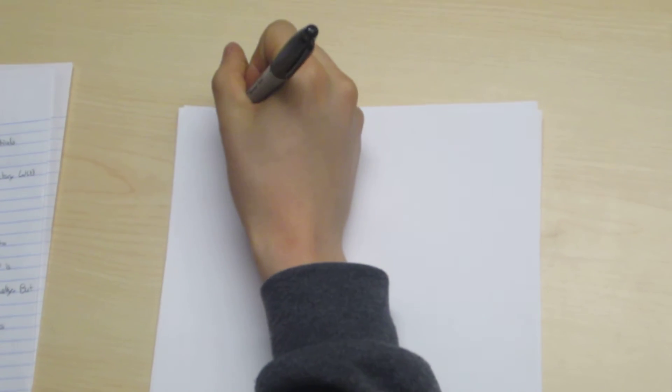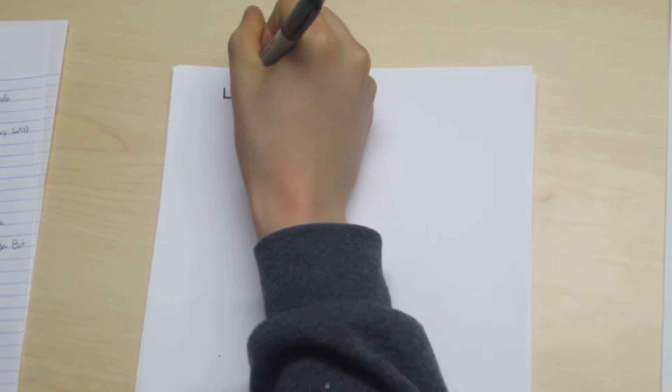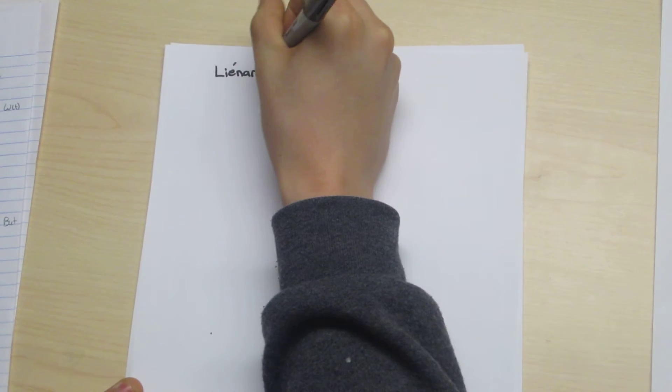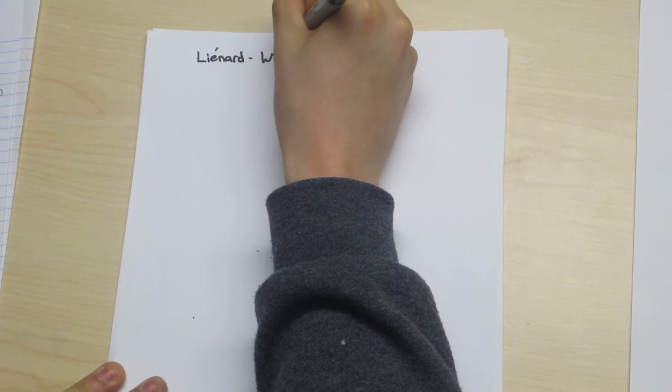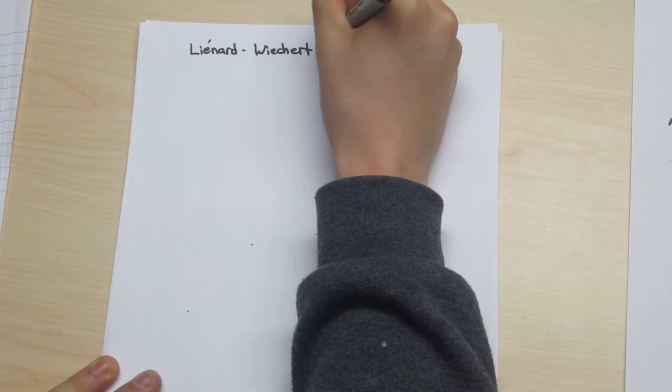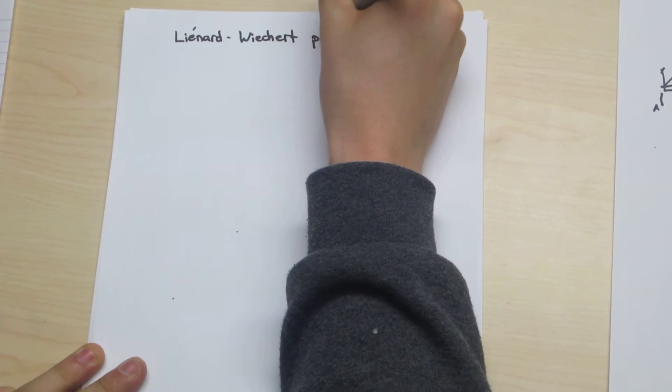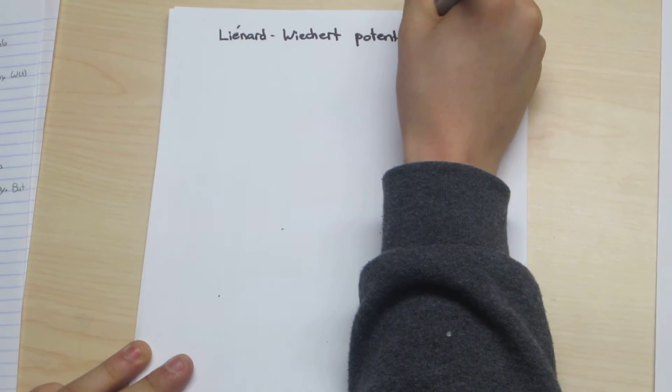In this video, we will be doing a derivation of the Liénard-Wiechert potentials, which is a derivation of the scalar and vector potentials phi of r and t, a of r and t.